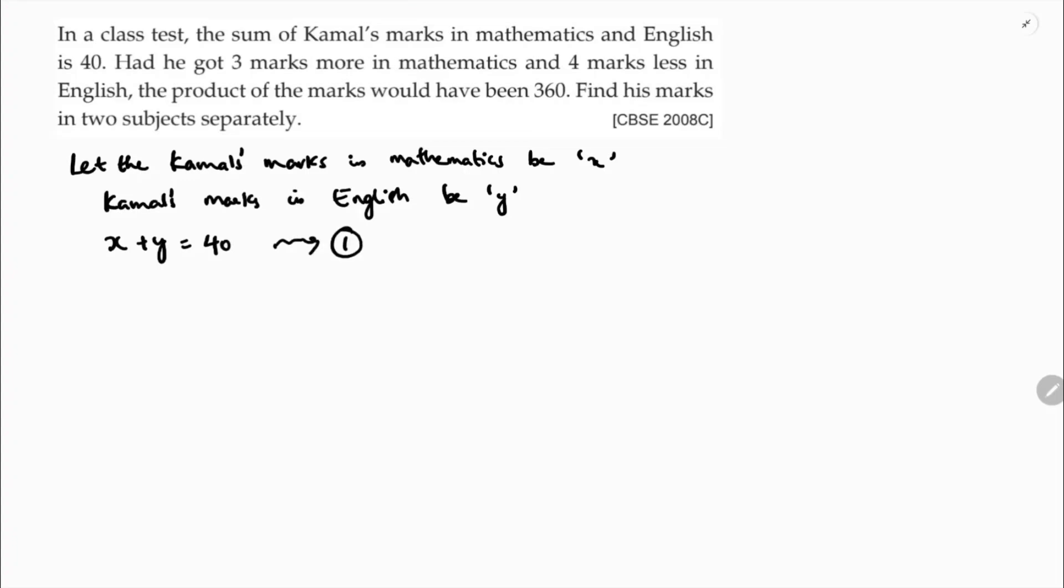Had he got 3 marks more in mathematics, so x plus 3, and 4 marks less in English, so y minus 4, the product would have been 360. Now I will multiply: x into y is xy, x into minus 4 is minus 4x, 3 into y is 3y, 3 into minus 4 is minus 12, equals 360.